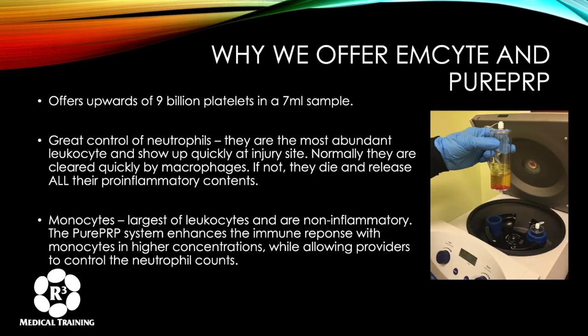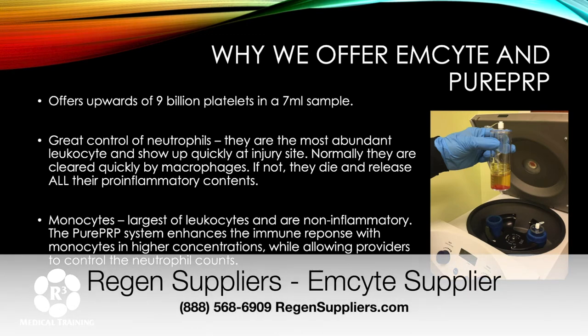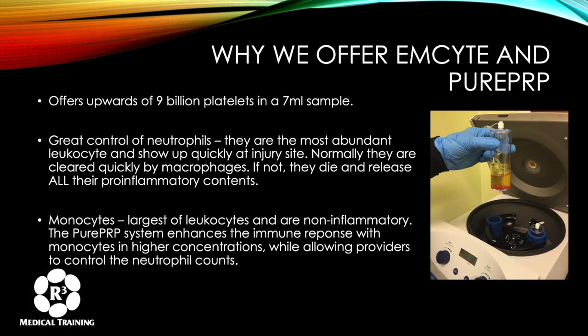The M-Site system offers upwards of nine billion platelets in a seven-milliliter sample with really good control of neutrophils. Neutrophils are the most abundant leukocyte; they show up quickly at injury sites but are normally cleared by macrophages. If not cleared, they die and release pro-inflammatory contents. Very high neutrophil counts — which is what you have after a single spin — can create a bigger problem for the first week or two, whereas the second spin keeps the monocytes but removes many of the neutrophils.